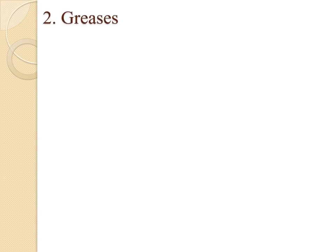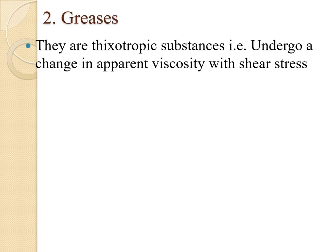The second type of lubricants is greases. Greases are thixotropic substances — they undergo a change in apparent viscosity with shear stress. When shear stress changes, the viscosity of the substance changes, and greases have this thixotropic property.